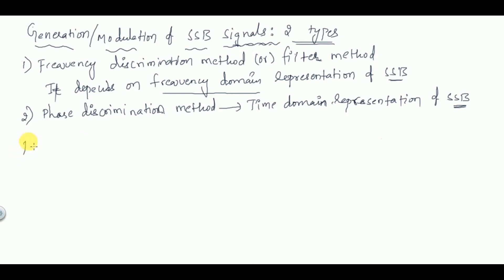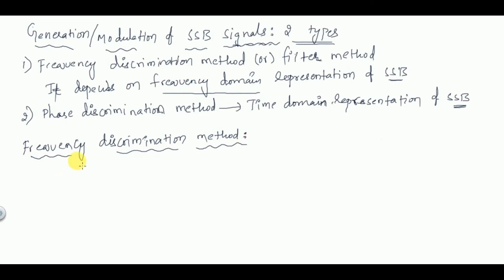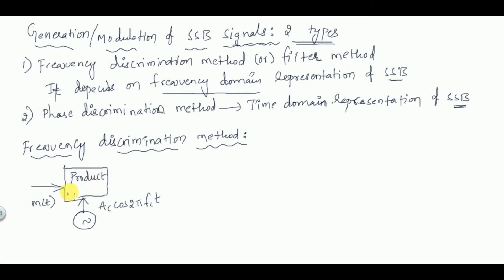Now we'll see the frequency discrimination method. The block diagram looks like this: you have the carrier signal Ac·cos(2πfc·t) and the message m(t) fed into a product modulator. The output of this product modulator is then passed through a band pass filter, and you get the SSB output s(t).